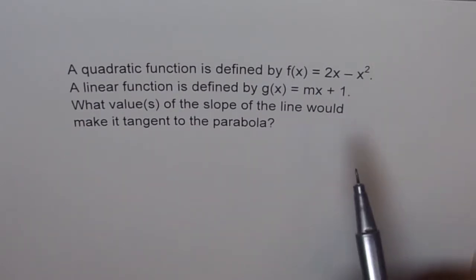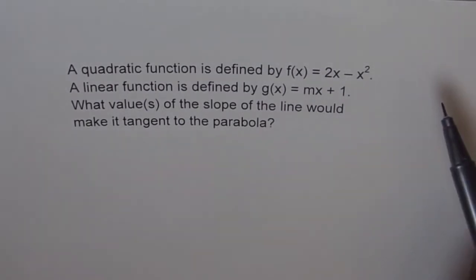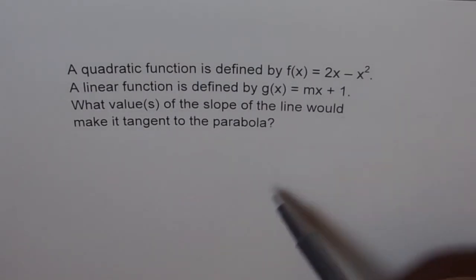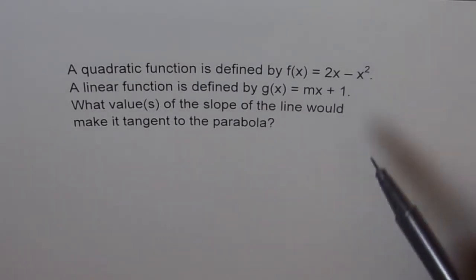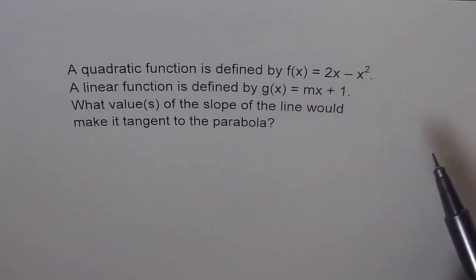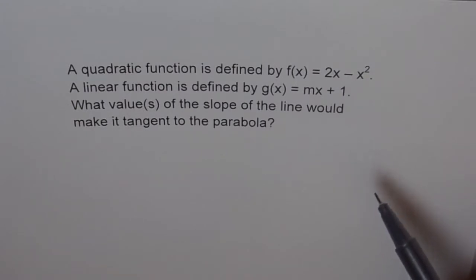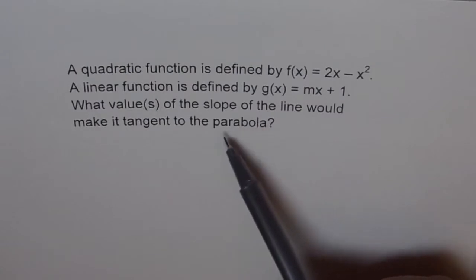What you need to understand is that if there is a parabola and a line, they can intersect at one point, they can intersect at two points, or they may not intersect at all. So there are three different scenarios. If they intersect at only one point, then the line will be tangent to the parabola. That's what we want to figure out here.